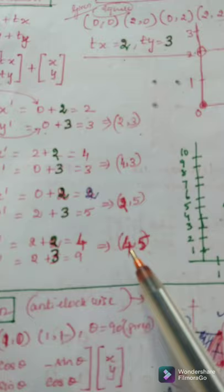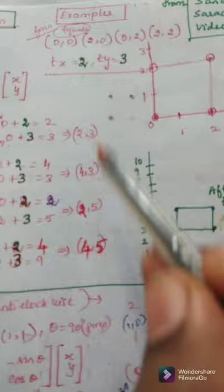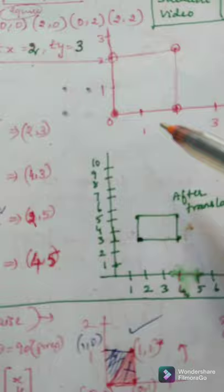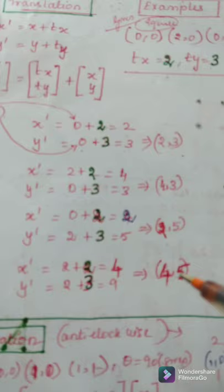Now, if we plot these points, we will be getting an object like this or a figure like this. Here, this original object is being translated to another position. And this is the concept behind translation.